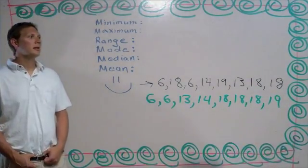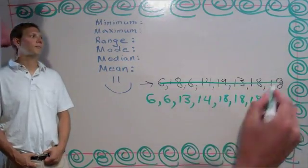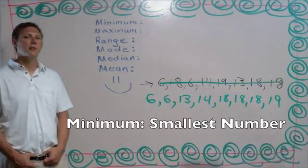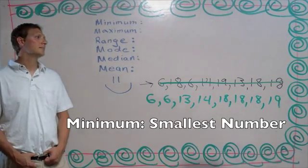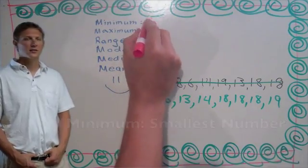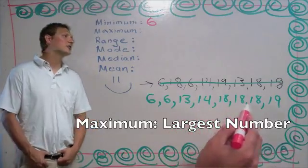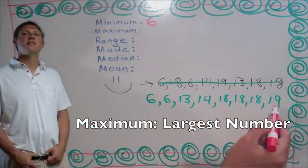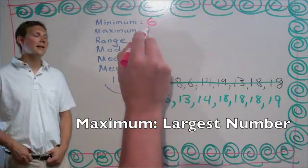With our numbers in order, let's look for the smallest one, also known as the minimum number. In this case, it is 6, so the minimum is 6. Maximum is the largest number in the series, which in this case is 19.